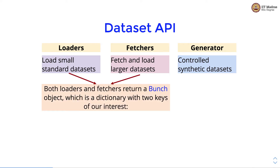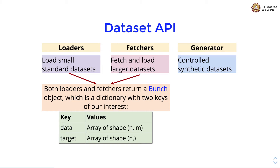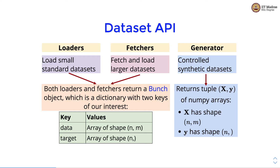Both loaders and fetchers return a bunch object, which is a dictionary with two keys of interest. One key is the data and the second is the target. The data key has a feature matrix of shape n by m, where n is the number of examples and m is the number of features. The target is the label vector with shape n. Generators, on the other hand, return a tuple (x, y) where x is a feature matrix of shape n by m and y is a label vector with shape n. Both the feature matrix and label vector are NumPy arrays.